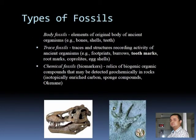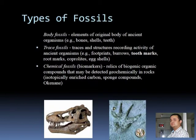Basically, there are three types of fossils. The first is body fossils — when you think of a fossil, this is probably what comes to mind. These are elements of the original body of ancient organisms: it could be bones, shells, or teeth. It could also have some carbon or preserved cells. For example, from a woolly mammoth you can take out the DNA from preserved cells, sequence the DNA, and even try to clone it — which is what some people at the Smithsonian are currently doing.